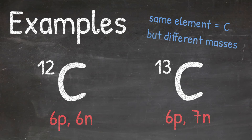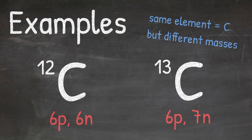Whenever you have the same element but a different mass, or the same number of protons but a different number of neutrons, you will have an isotope. Now you know that an isotope is when you have the same element but a different mass, and this results due to a different number of neutrons.